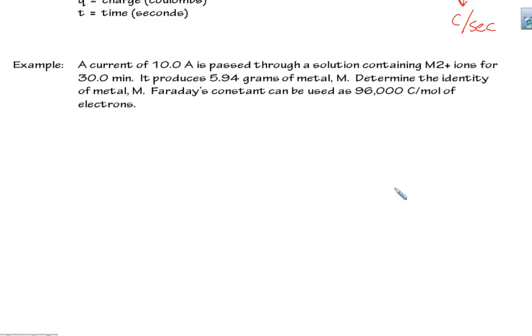I have also seen this kind of a fun little equation. A current of 10.0 A is passed through a solution containing M²⁺ ions, some kind of unknown metal, and its charge is plus two or two plus, for 30 minutes. It produces 5.94 grams of solid metal, whatever this unknown metal is. We want to determine its identity. Excellent. The way we will do that is by solving for its molar mass, which is grams per mole.